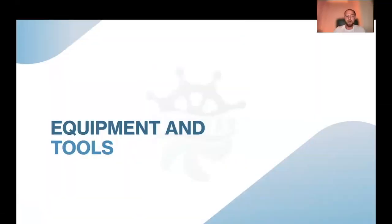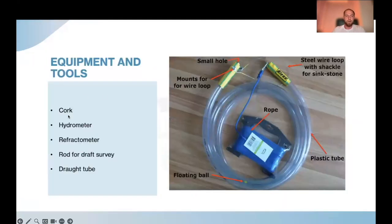Let's find out what kind of equipment and tools we need for draft survey. So, cork—cork is a tube for collecting a water sample. I've seen when I've been in Brazil, I've seen the cork which I guess is a perfect one, the ideal one.